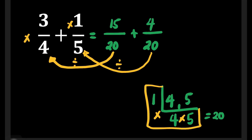Now we are ready to add because they are already similar fractions. We can just add the numerators: 15 plus 4 is equal to 19. Then we copy our denominator, which is 20. So, our final answer is 19 over 20.